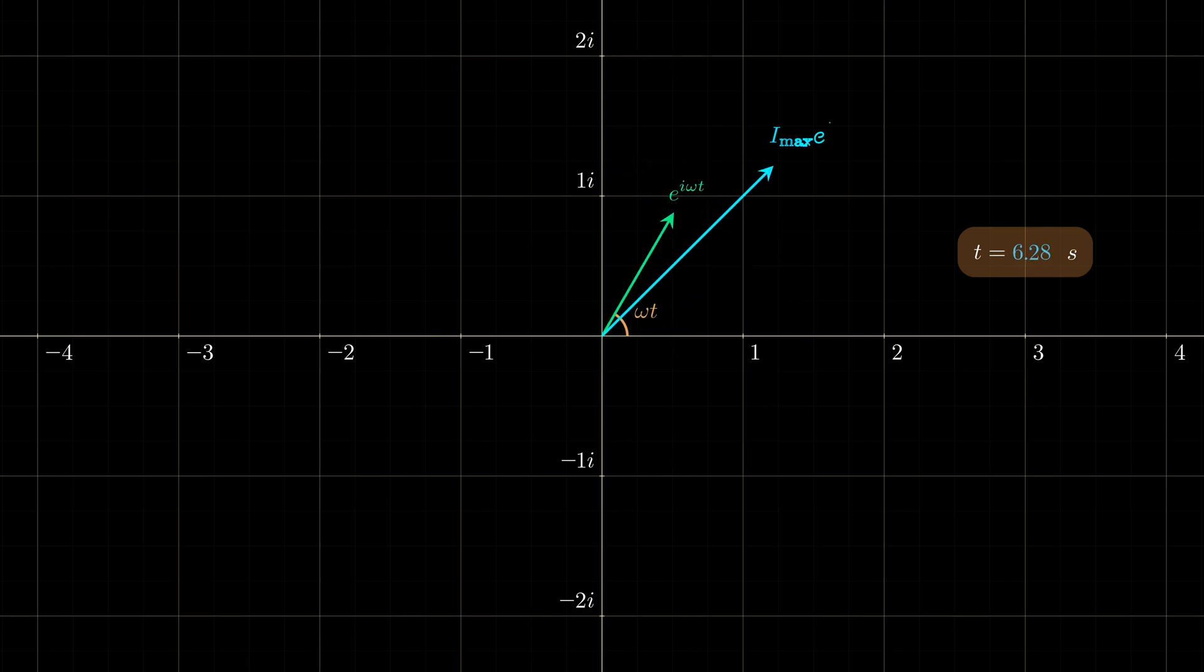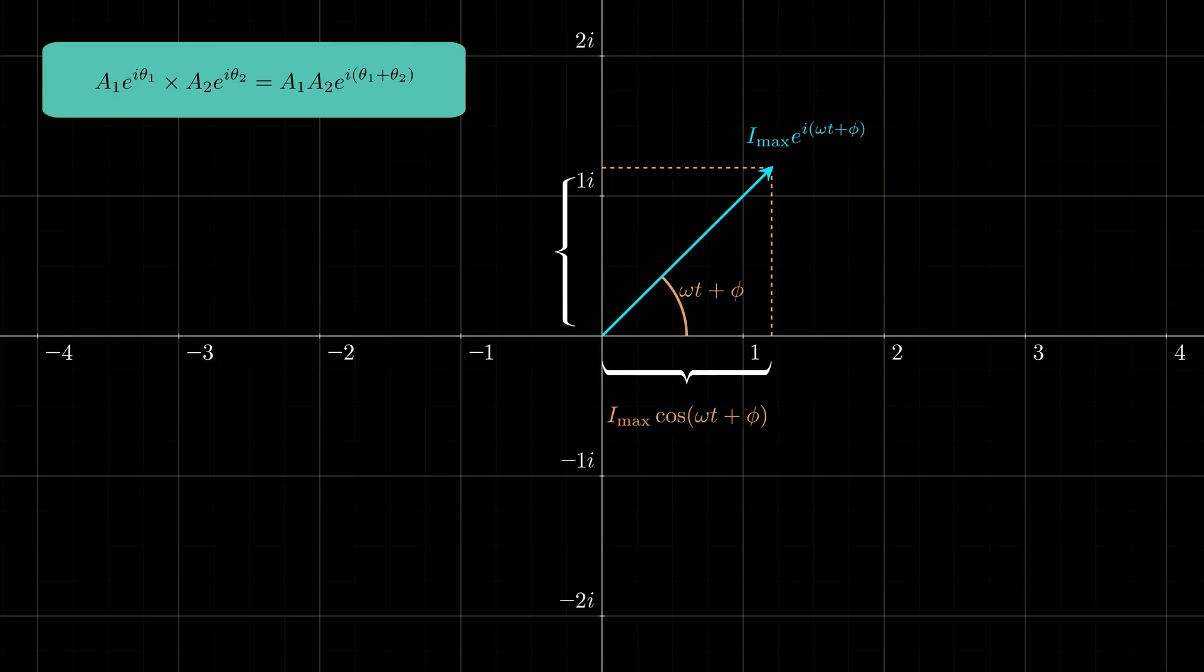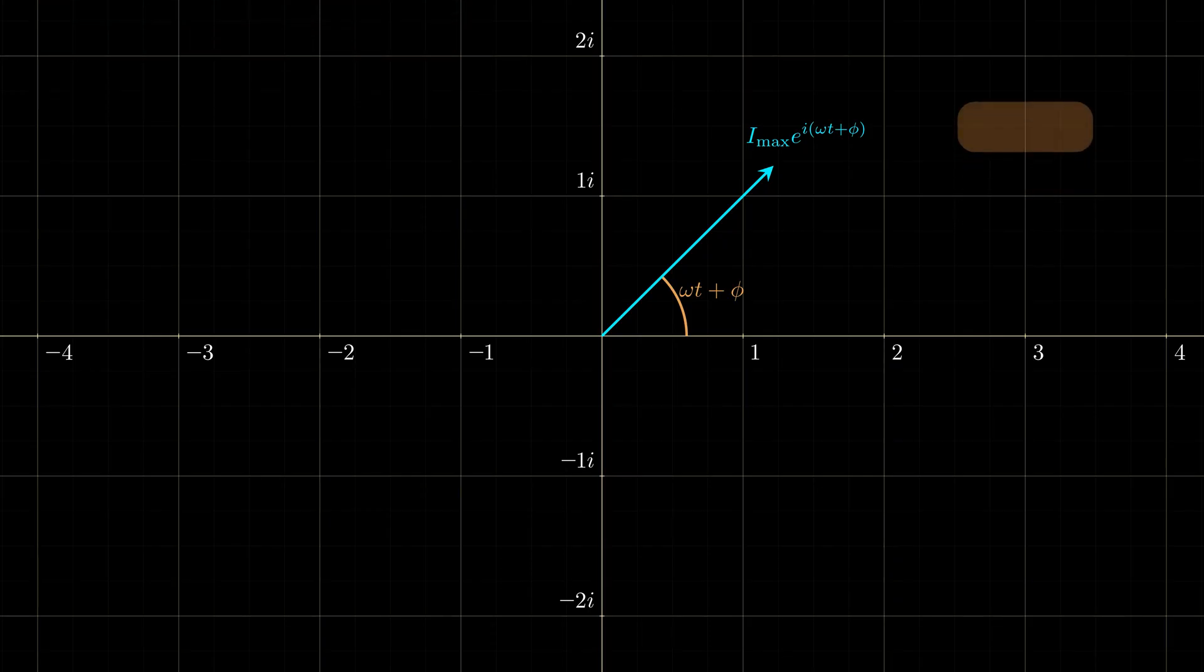Now what happens when we multiply the two vectors together? Using exponential characteristics, the angles will add up and magnitudes will multiply, which gives us a new vector with the real part corresponding to our original current cosine wave. And this vector will also rotate as time goes by.